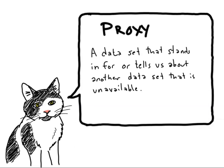In general terms, a proxy means a thing that stands in for another thing. In the climate context, a proxy data set is one that stands in for climate data like temperature and rainfall when we don't have direct measurements of them.